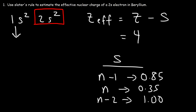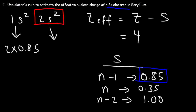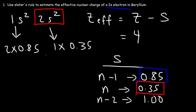For the two 1s electrons, they're one energy level lower than the 2s electron, so we give them a value of 0.85. That's 2 times 0.85. There's one other 2s electron we need to take into account — since there are two 2s electrons total and we're analyzing one of them, the other one gets a value of 0.35. So we have 2 times 0.85 plus 1 times 0.35, giving us an S value of 2.05.